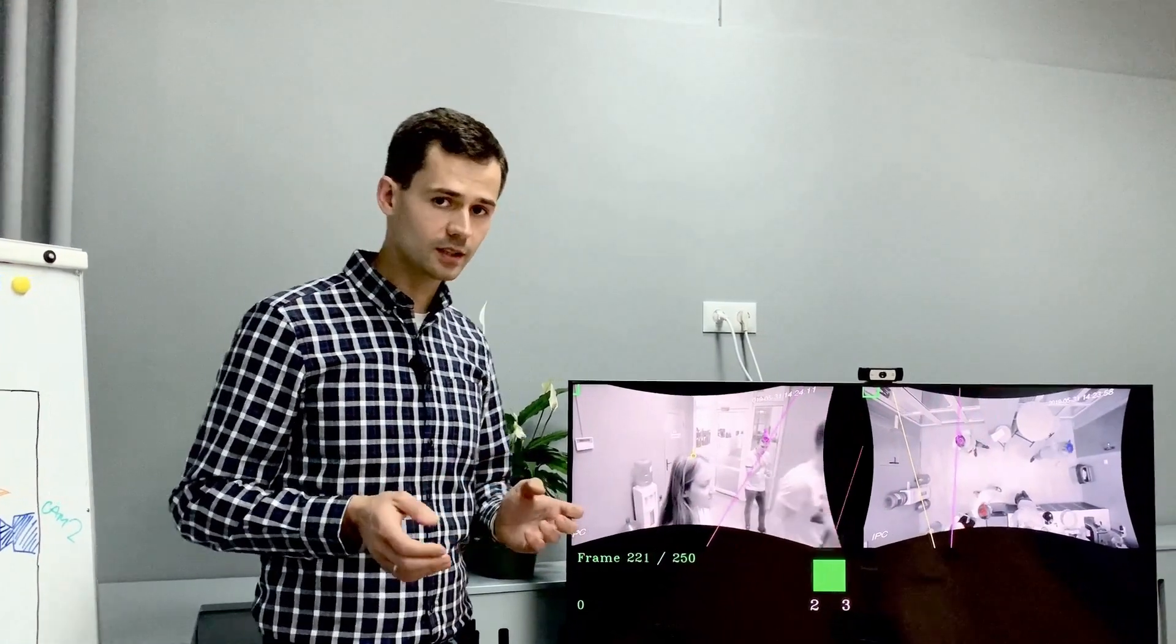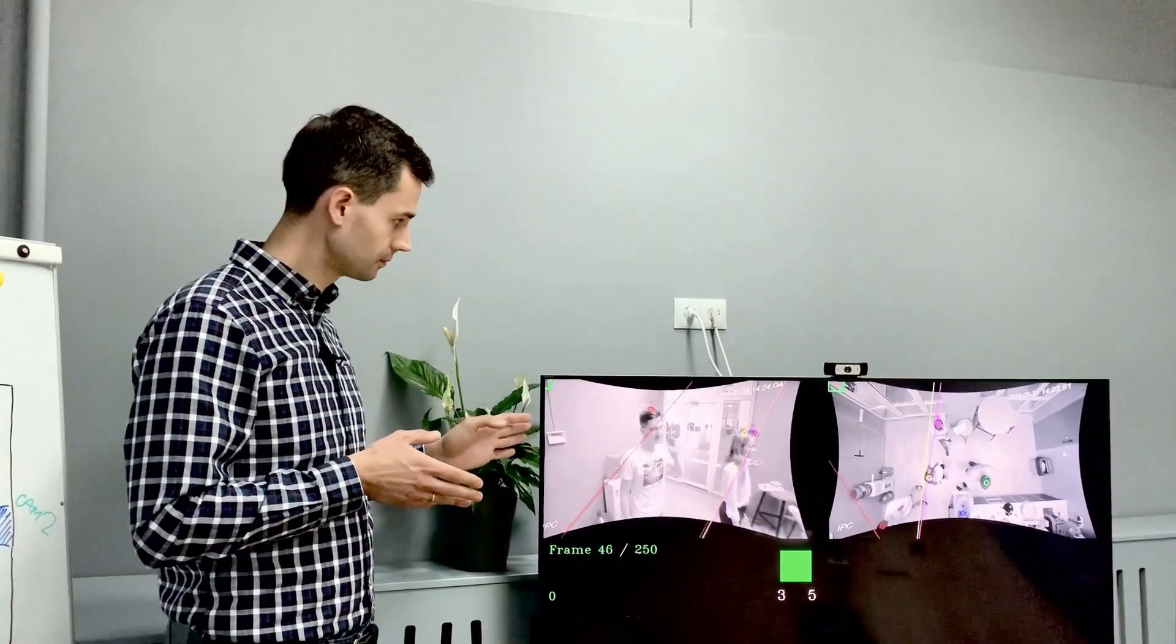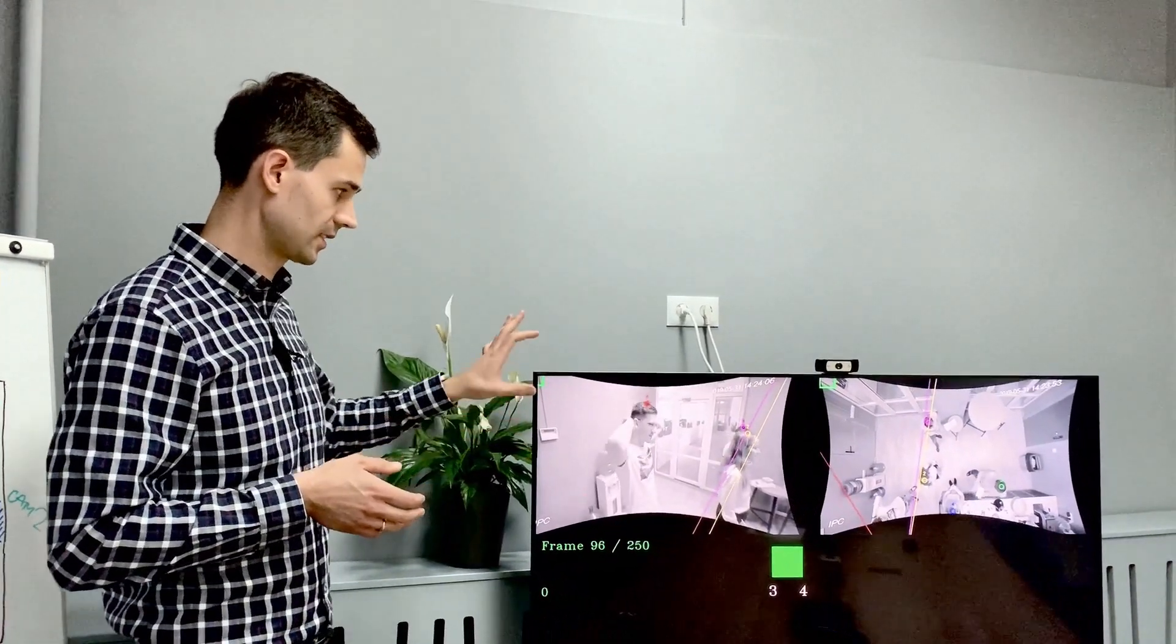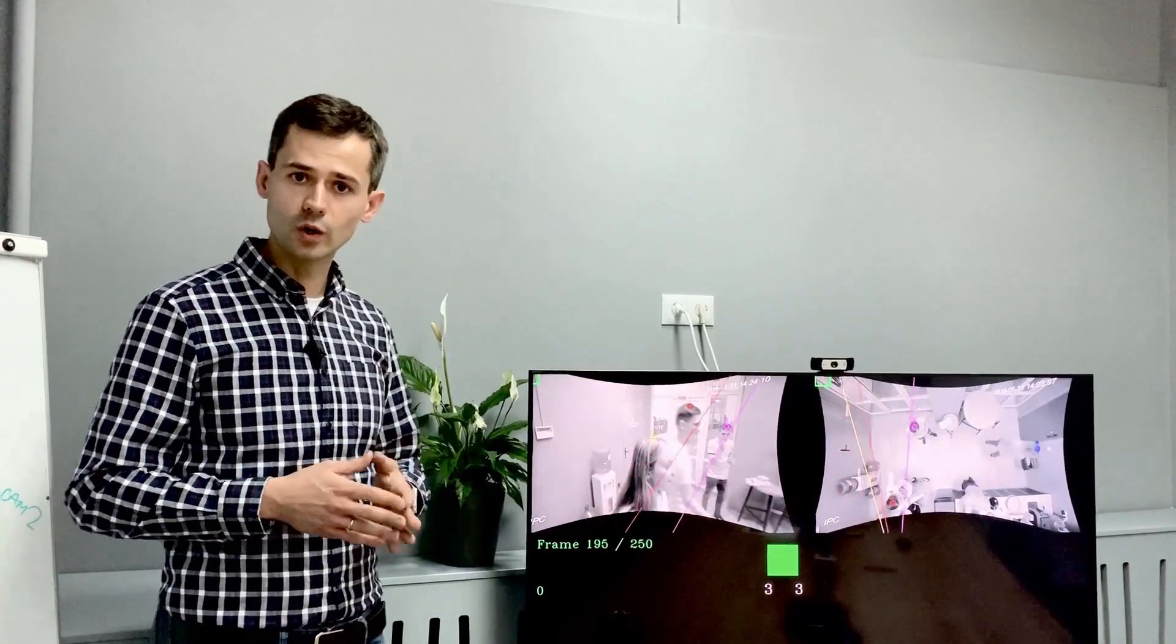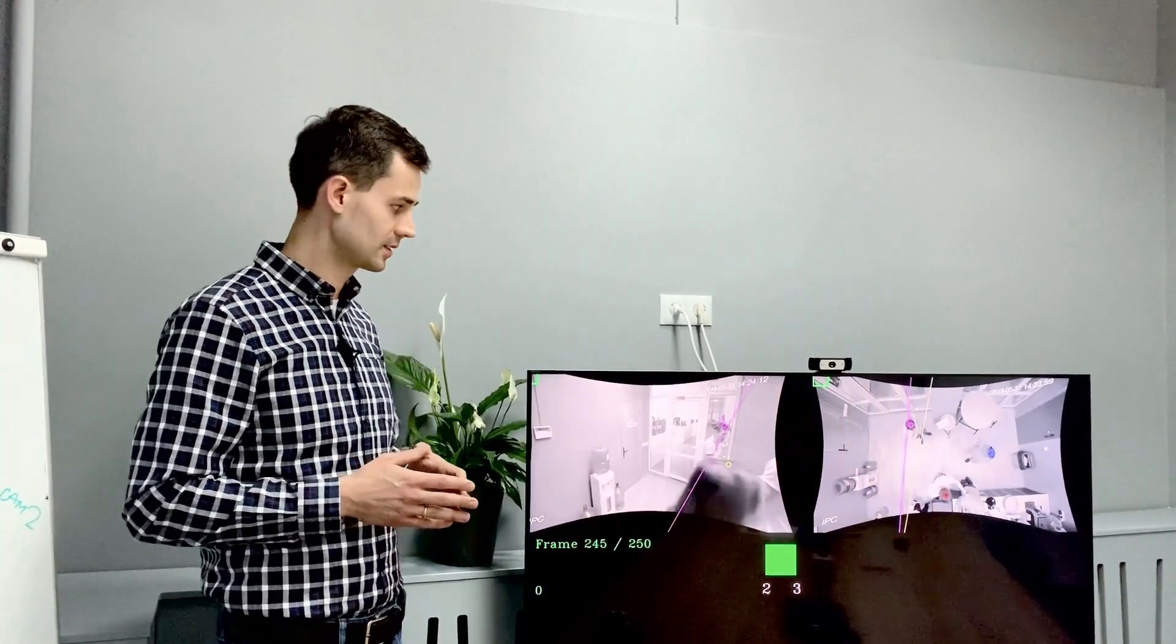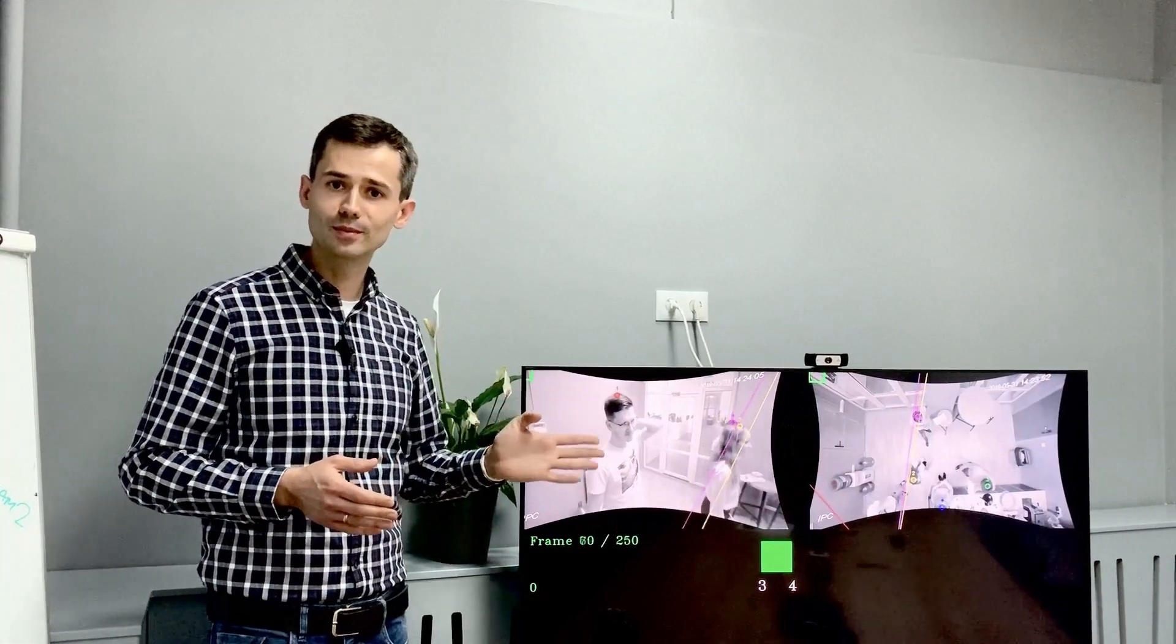So what we did is we installed two cameras in our office kitchen, one at eye level and the second one fixed to the ceiling. It's still a work in progress, but as you can see in both videos, we can track the same people.